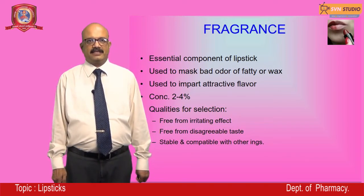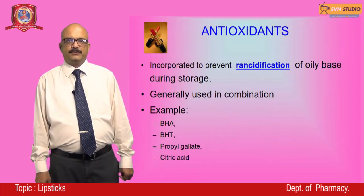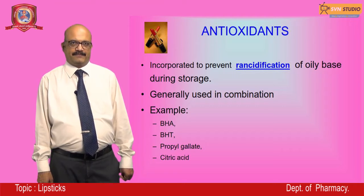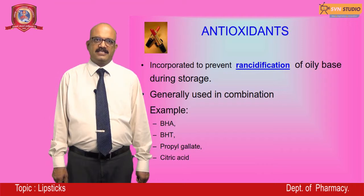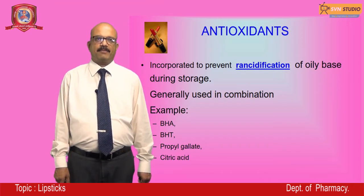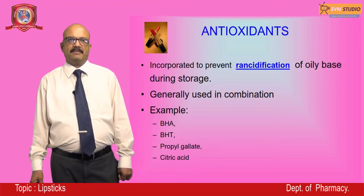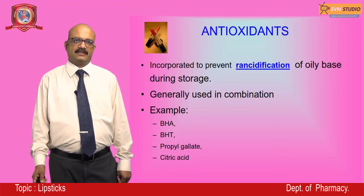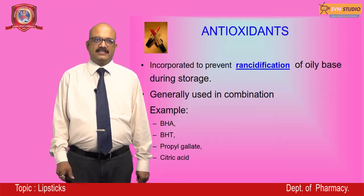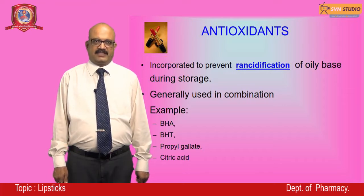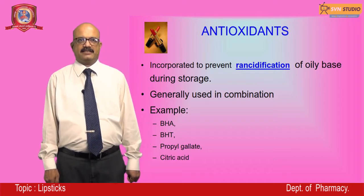Antioxidants are used in the product to prevent rancidification of the oily bases during storage. Rancidification is a major problem when using oily bases or waxes, and may lead to hydroxylation or oxidation. Antioxidants are generally used in combination. Examples include BHA, BHT, propyl gallate, and citric acid.